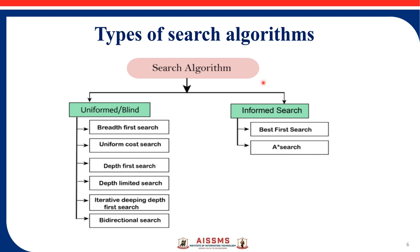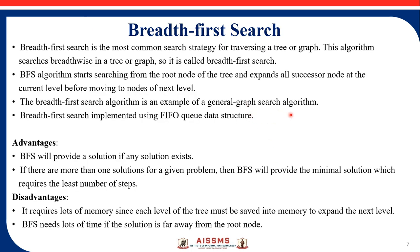In informed search, the algorithm has cost knowledge, and it includes Best First Search and A* (greedy search). In this video we will see BFS and DFS; the remaining will be covered in the next video. Breadth First Search is the most common search strategy for traversing a tree or graph. This algorithm searches breadth-wise in a tree or graph, starting from the root node and expanding all successor nodes at the current level before moving to the next level.